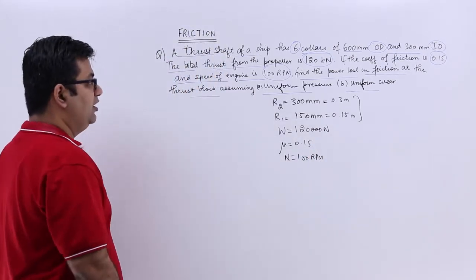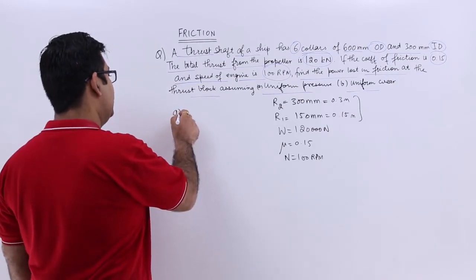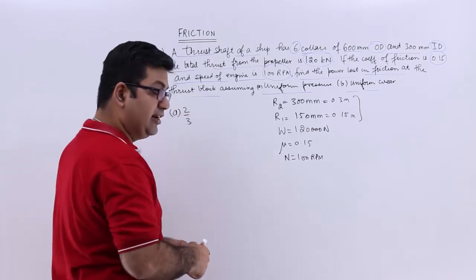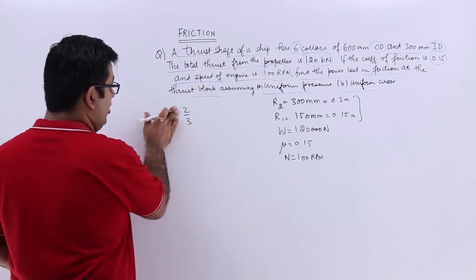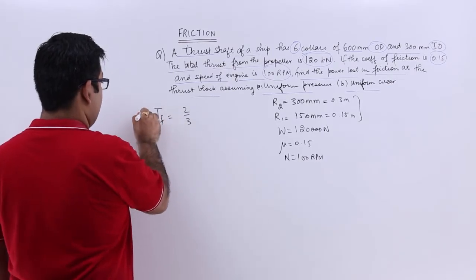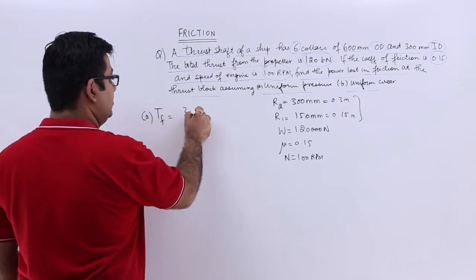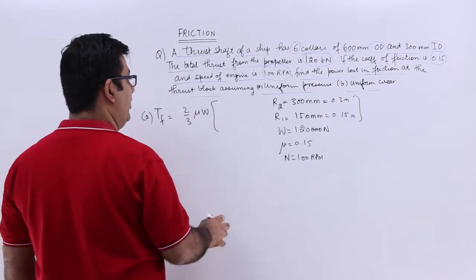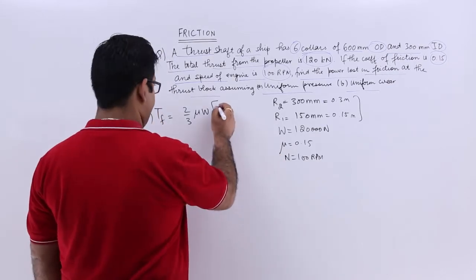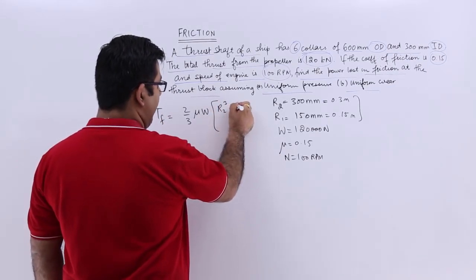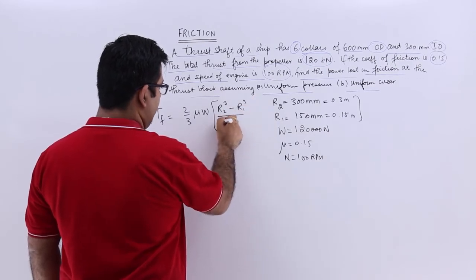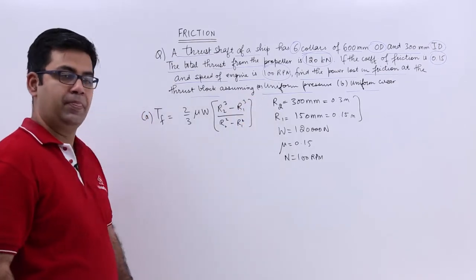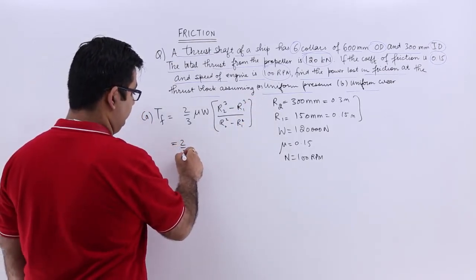Now with uniform pressure, we know the formula. We will look at the formula for torque. So torque for uniform pressure is mu W. Now this is going to be a hollow bearing, or a hollow shaft, so this would be R2 cube minus R1 cube by R2 square minus R1 square.